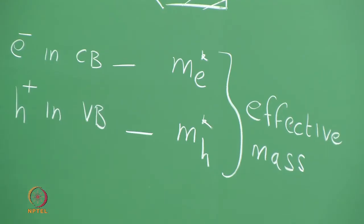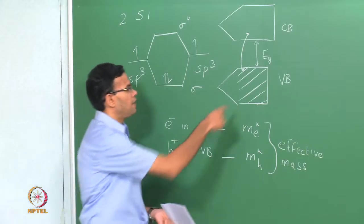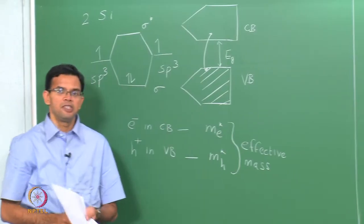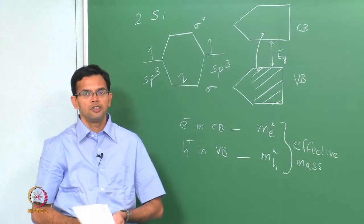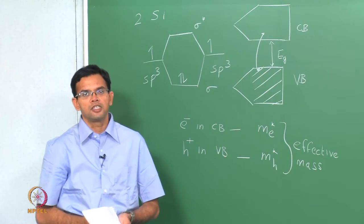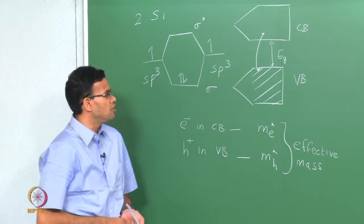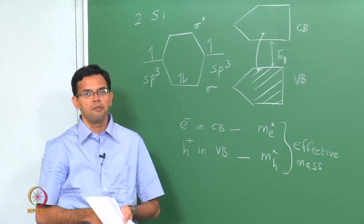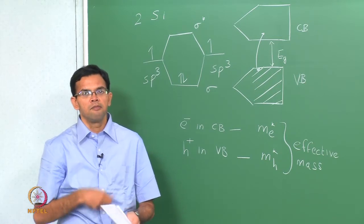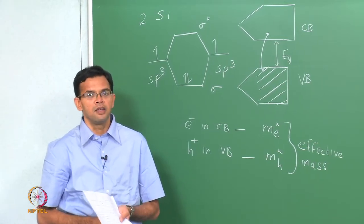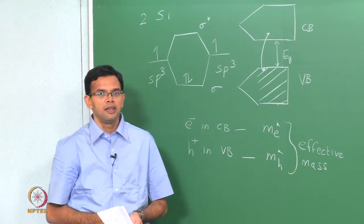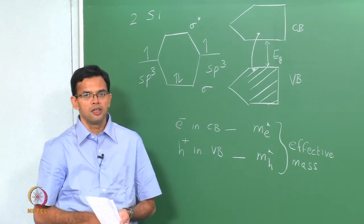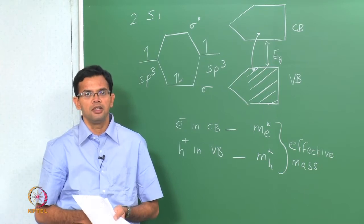The difference between a semiconductor and a metal is that in a metal, we do not have a band gap. We have some filled states and some empty states, so electrons are always available for conduction and the number of electrons is typically equal to the number of atoms, which means metals have high conductivity. The next thing we are going to do is to calculate the number of electrons and holes available for conduction in a semiconductor.